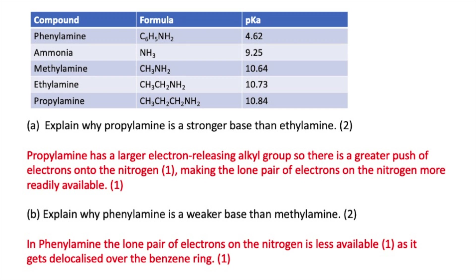Question B asks you to explain why phenylamine is a weaker base than methylamine. In phenylamine, the lone pair of electrons on the nitrogen is less available — one mark — as it gets delocalised over the benzene ring — one mark.